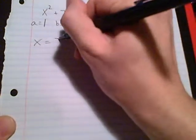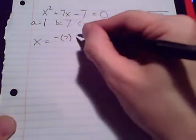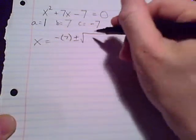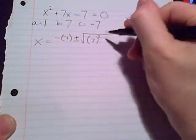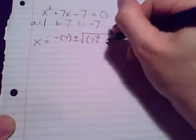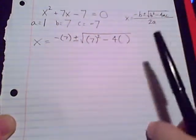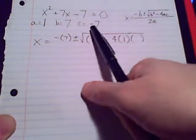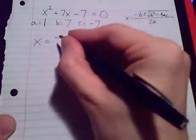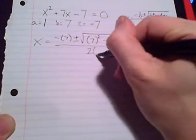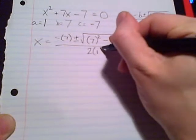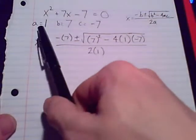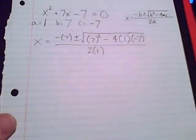Negative b, we have that negative 7, plus or minus square root, b squared is 7 squared, minus 4 times a is 1, c is negative 7, all over 2 times a is 2 times 1. All right, so all I've done is just replaced a, b, and c with these numbers that we pulled off of the equation in standard form.